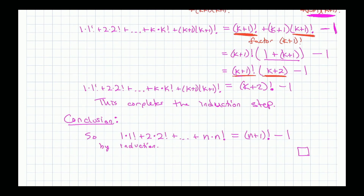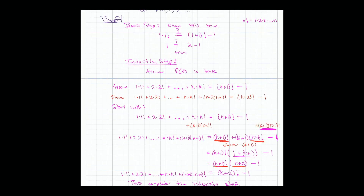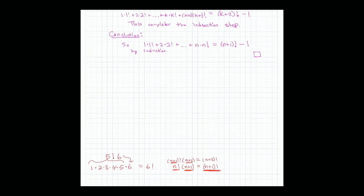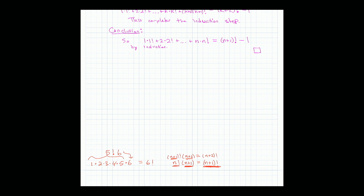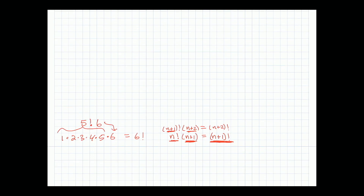These proofs take quite a bit of writing but they're very structured: basis step, induction step, conclusion. They're the longest proofs we've done so far, but they're also pretty formulaic. You just need to do a bunch of them and you'll get better as you go. We're about 36 minutes in — let's do at least one more.